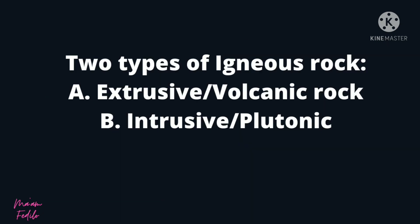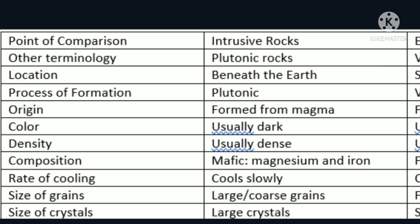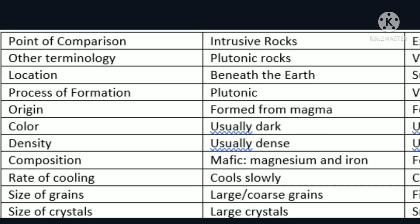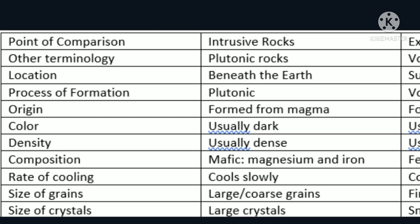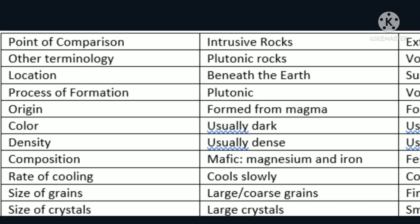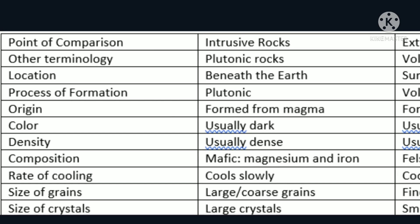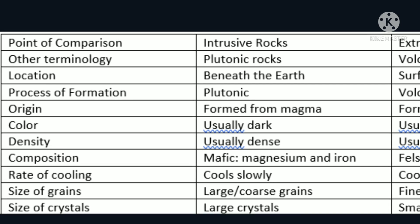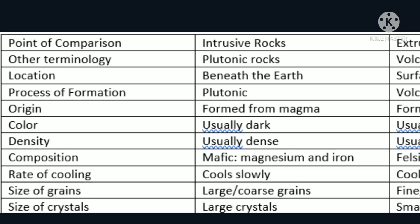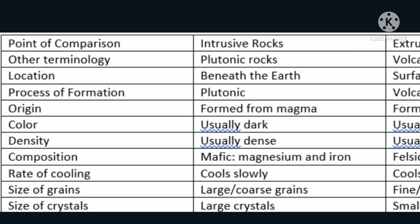What are the types of igneous rocks based on their formation? In terms of formation, igneous rocks can be classified into two: intrusive and extrusive rocks. Tingnan natin ang table para makita natin ang differences between intrusive and extrusive rocks. Ang ating point of comparison ay ang mga sumusunod: other terminology, location, process of formation, origin, color, density, composition, rate of cooling, size of grains, and size of crystals.